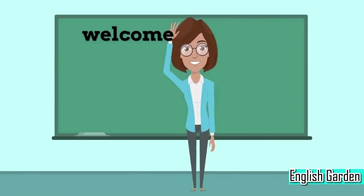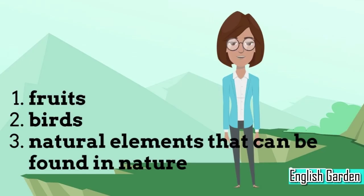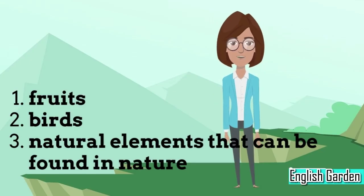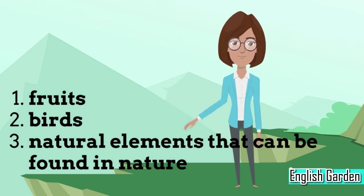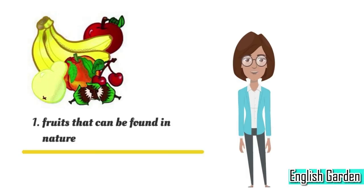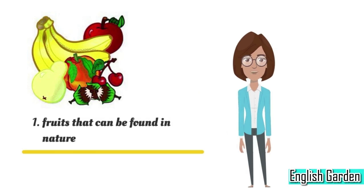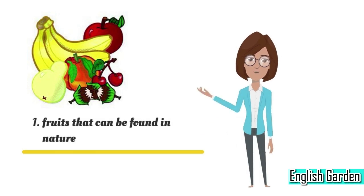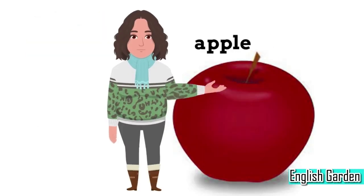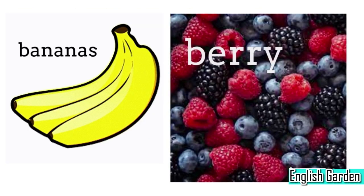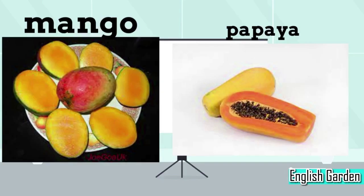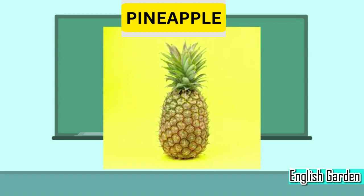Welcome to our English lesson for kids. Today we're going to learn about different fruits, birds, and natural elements that can be found in nature. Let's talk about fruits. There are many different types of fruits, such as apples, oranges, bananas, berries, lemons, grapes, mangoes, papayas, and pineapples.